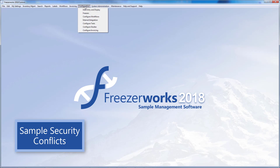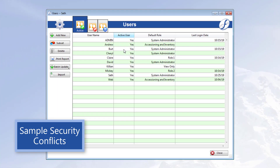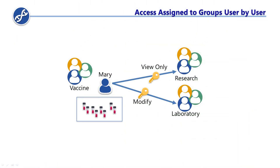Sample security in FreezaWorks is based on the owner of a sample. Prior to 2019, owners were always individual users — a sample's creator was its owner by default. You then set up access to samples on a user-to-user basis, which, for a number of reasons, can cause headaches.